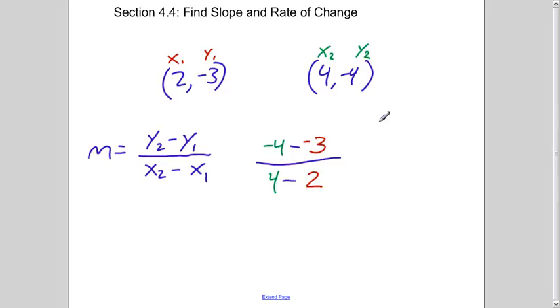Then just do the calculations. Minus a negative means plus, negative 4 plus 3 is negative 1, 4 minus 2 is 2, so the slope from these two points is negative 1 half.